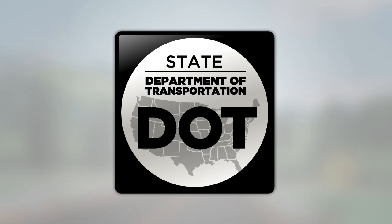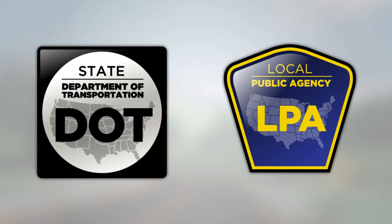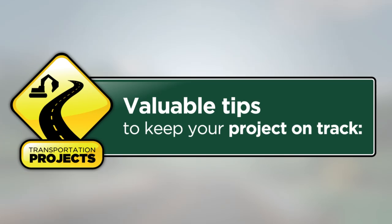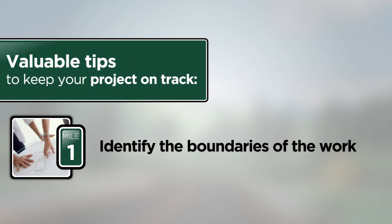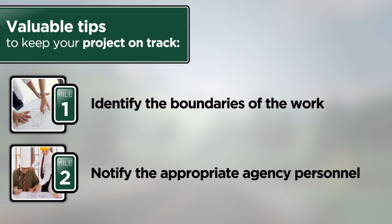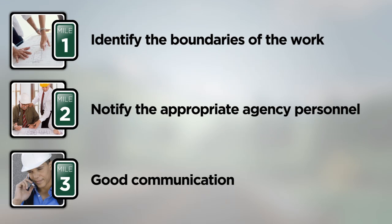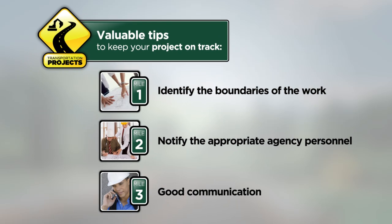Your State Department of Transportation, or State DOT, may allow you, the local public agency, or LPA, to manage the right-of-way acquisition for your project. The agency responsible for acquiring right-of-way is normally determined by the project agreement between you and your State DOT. As you are developing your Federal-aid highway project, here are some valuable tips that should help keep your project on track. During the design phase of a project, you should identify the boundaries of the work and determine if construction activities will affect any property adjacent to those you own. Notify the appropriate agency personnel that there will be right-of-way acquisition needed so the process can begin. Good communication with those responsible for acquiring the right-of-way for your project is key for keeping your project on schedule. This will help you identify issues early on, as right-of-way acquisition can become complex, and will allow you time to make needed adjustments to the project design.